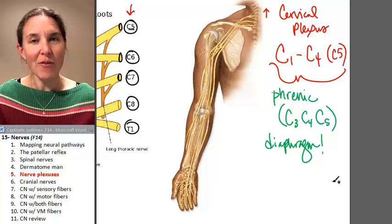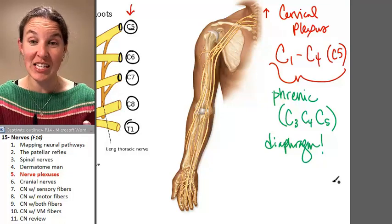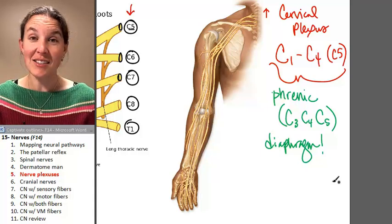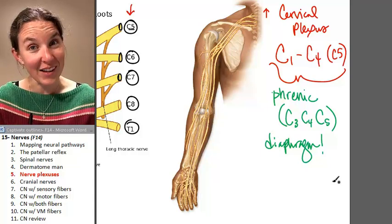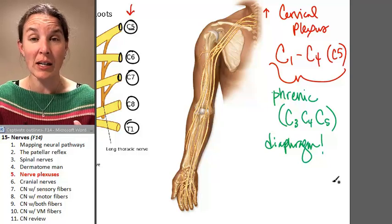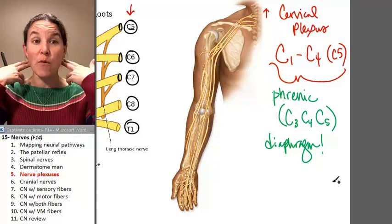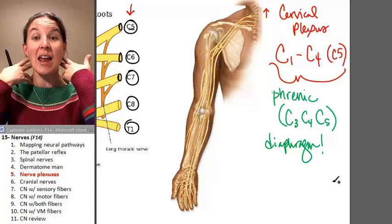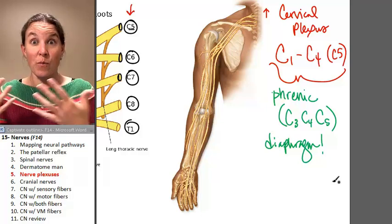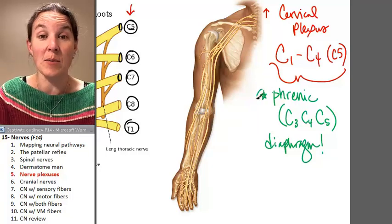The diaphragm, if you have an injury to spinal nerve C3, C4, or C5, chances are excellent that you are going to stop breathing. In fact, in clinical settings, they have a mnemonic: three, four, five, stay alive. To help you remember that if we have damage that high in your cervical region that you run the risk of not being able to breathe anymore because of damage to the phrenic nerve.